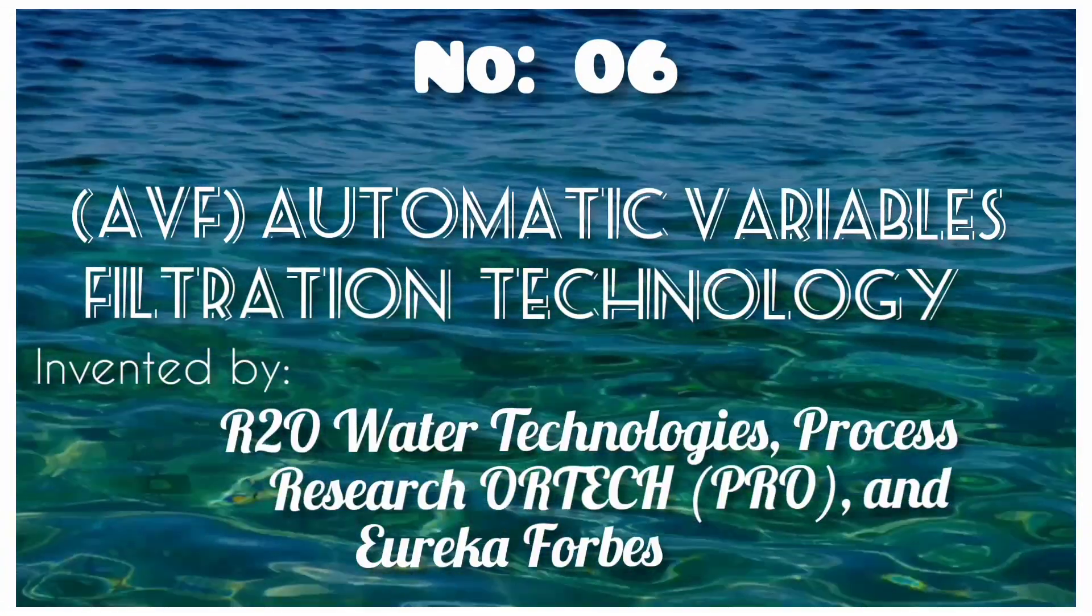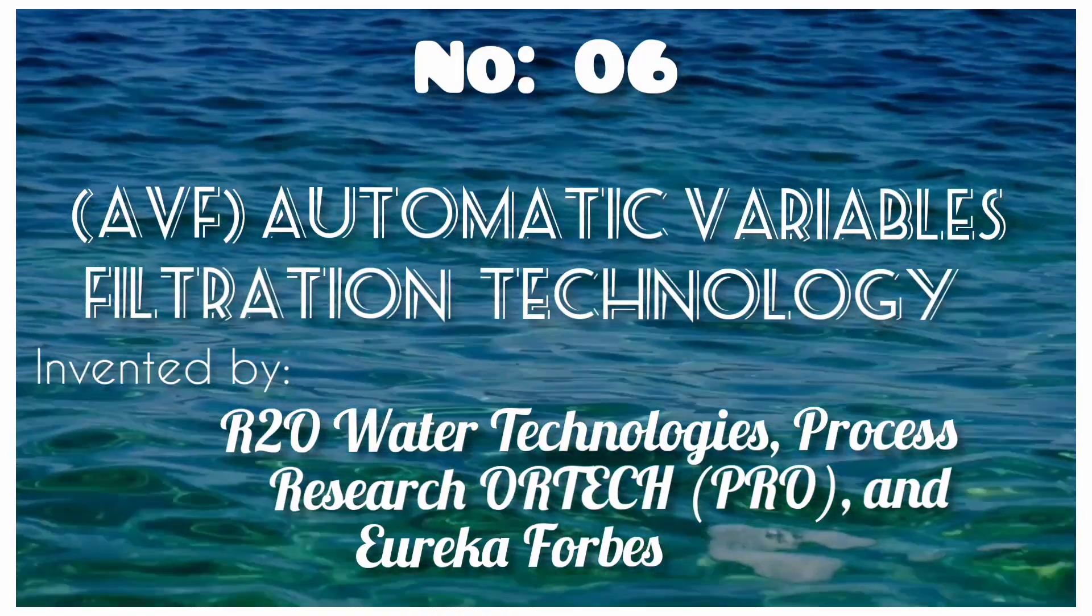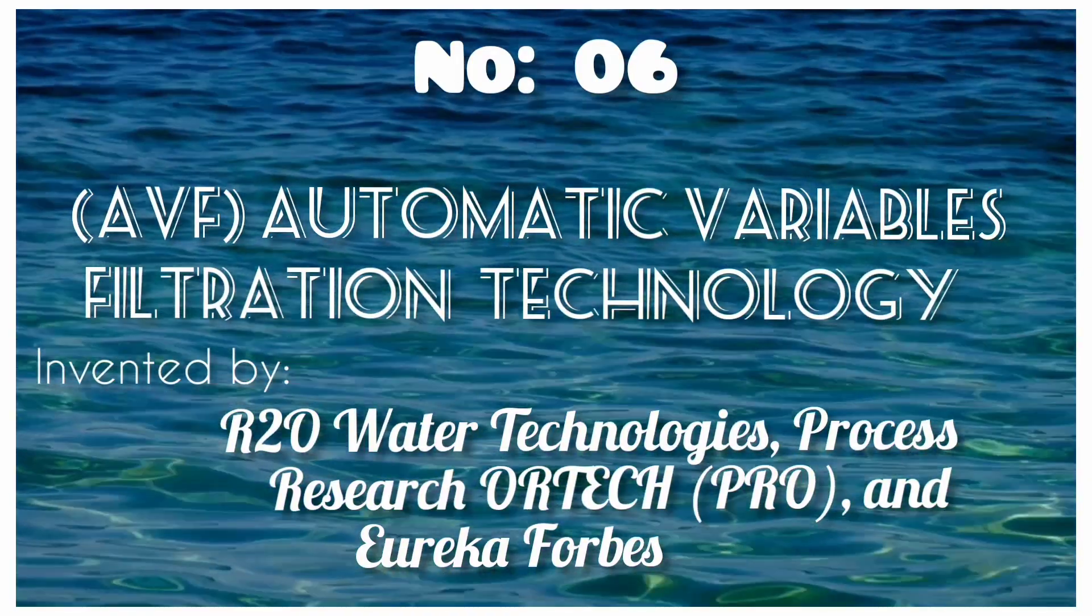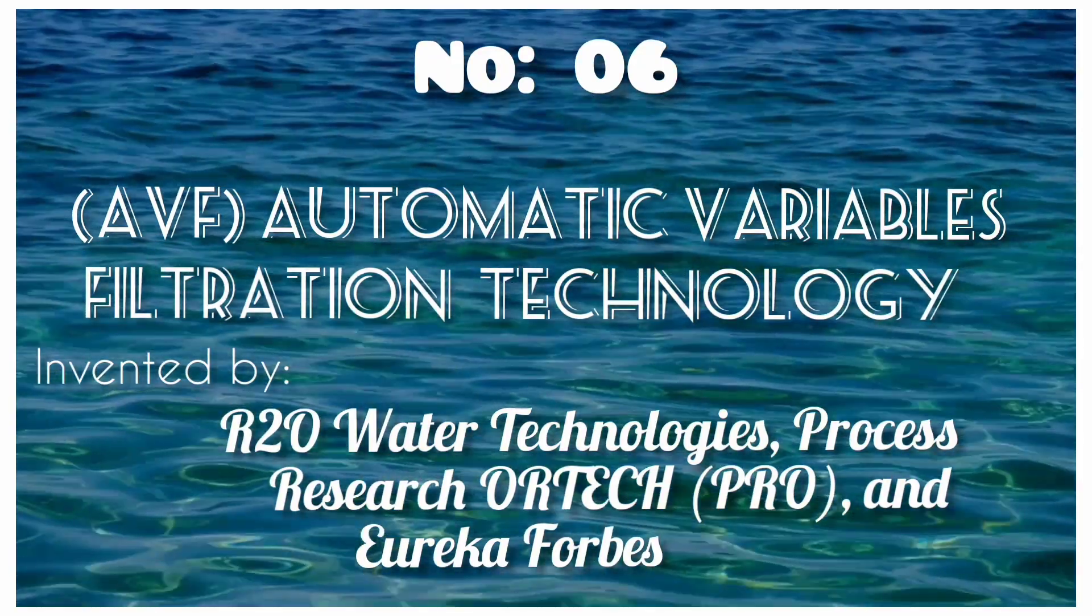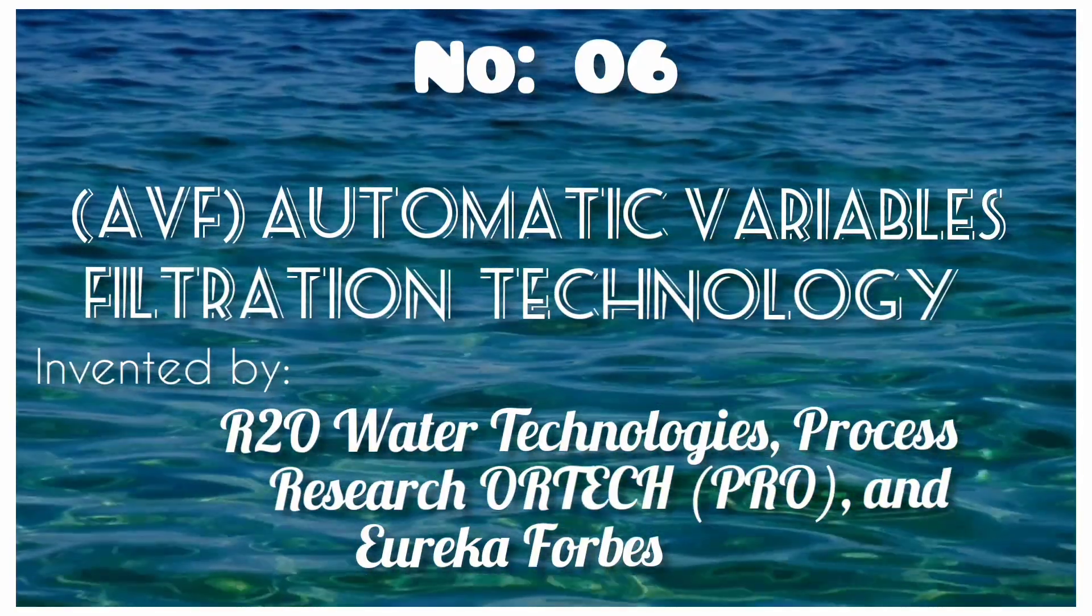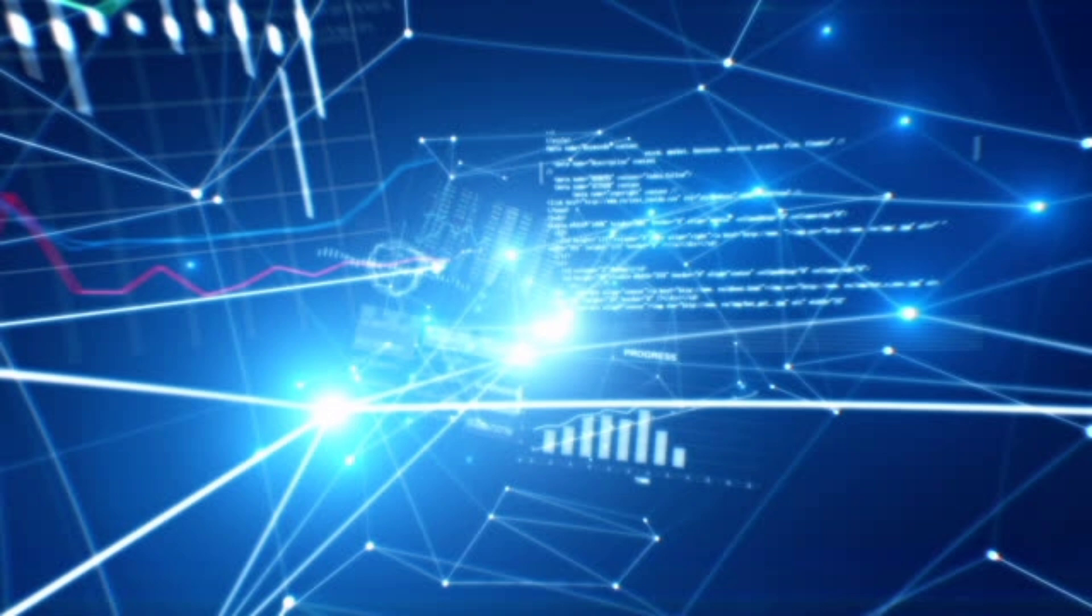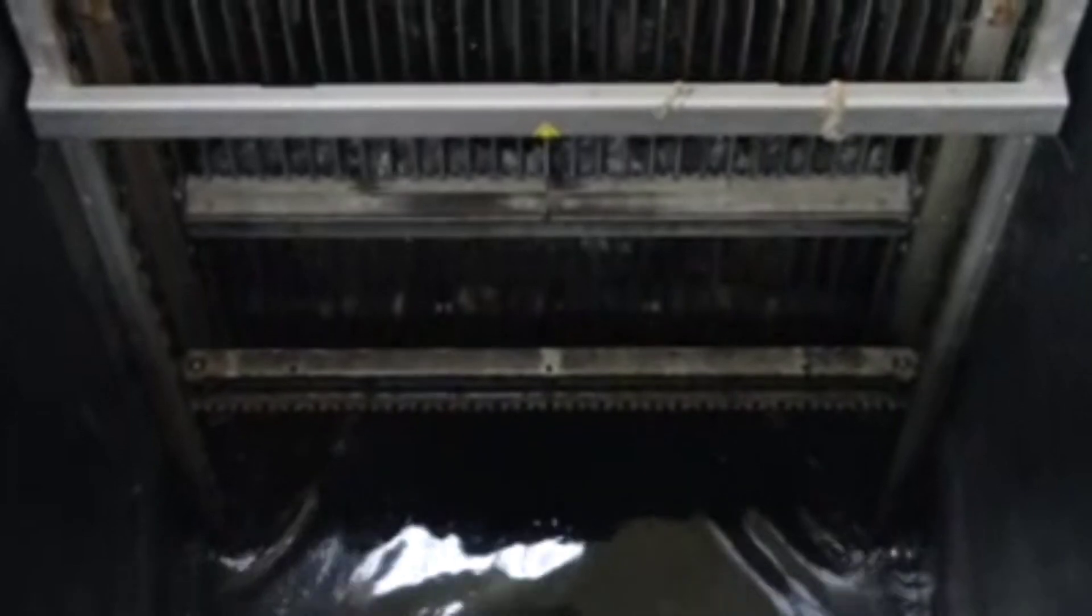Number 6. Automatic Variable Filtration Technology. The automated variable filtration system can be used in municipal drinking water and wastewater treatment facilities. Automated variable filtration technology involves a simple process via upward flow of influent and cleaned by downward flow of filter media. It eliminates the need for any additional process of fresh water for filter media cleaning.